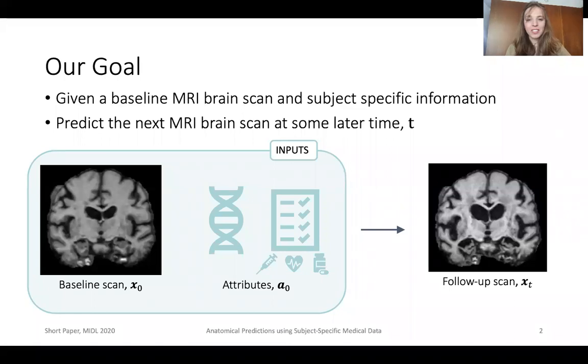Imagine that for every subject in a population, you're given a baseline brain MRI scan and subject-specific information like their age, their sex, their Alzheimer diagnosis, the results of some cognitive tests, and genetic information.